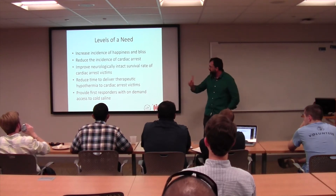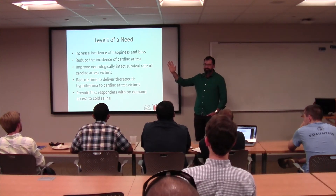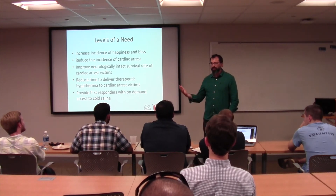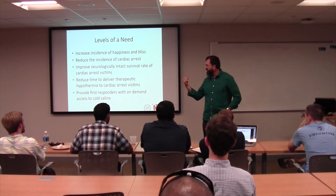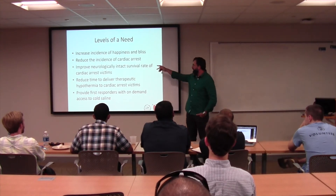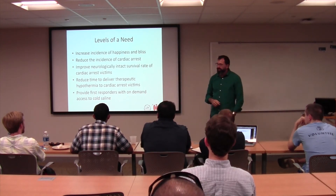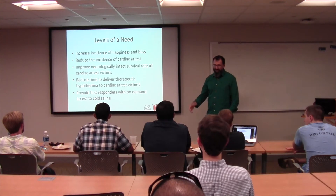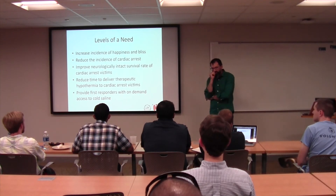So if you go up, it's eventually 'increase the incidence of happiness and bliss' — that's the highest level need statement. How are you going to increase the incidence of happiness and bliss? Any number of ways — we're not going to tell you how, we just know we want that to happen. Reduce the incidence of cardiac arrest is maybe one way. How can we reduce the incidence of cardiac arrest? We can eat healthier, we can exercise more — lots of different ways — and it doesn't in and of itself have a solution.